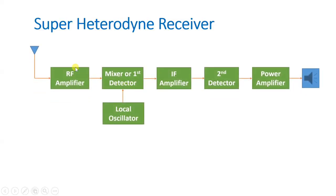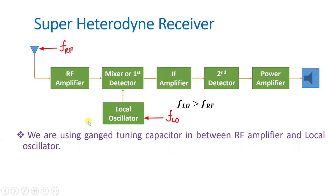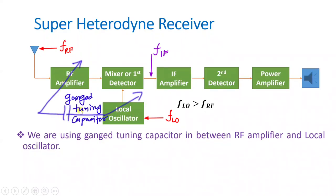We have already seen the super heterodyne receiver block diagram in a previous session, which explained the working parameters and frequency components of this block diagram. Now there is a question: why should F_LO be greater than F_RF? We have already discussed that to have a fixed IF frequency, we need a ganged tuning capacitor between the RF amplifier and local oscillator, which keeps F_IF fixed.